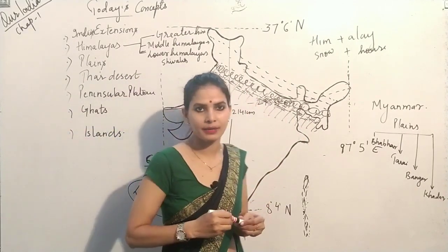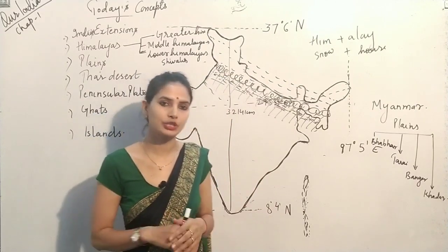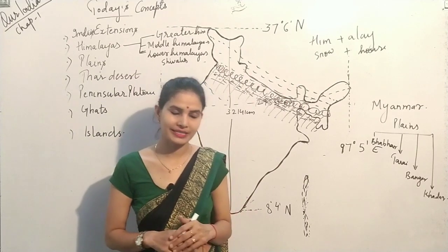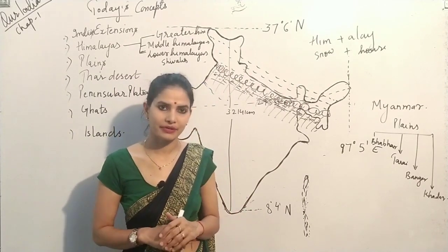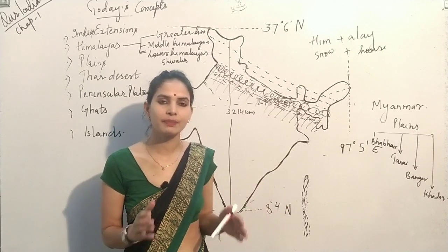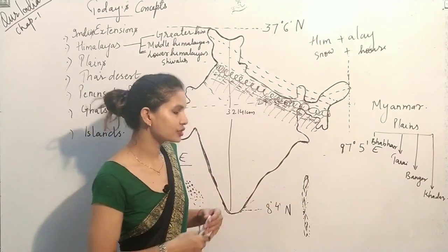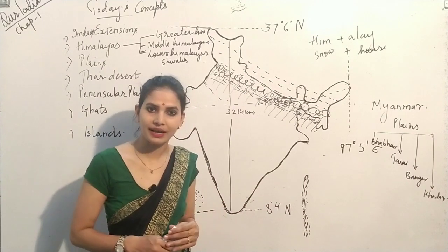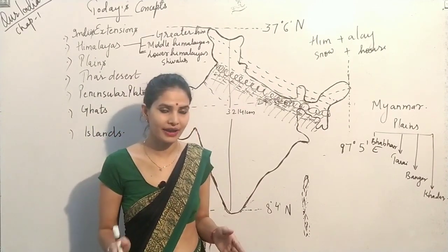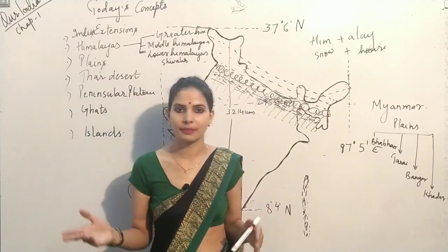Next is the Bangar part. Bangar and Khadar basically form around the banks of rivers. The Bangar is the oldest alluvial soil — it is where floodwater never reaches, and it forms away from the banks of rivers. The Khadar forms just around the banks of rivers and is very fertile for agriculture, making it very useful for farmers.